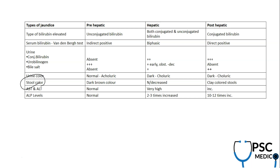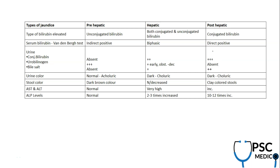In urine, examine conjugated bilirubin, urobilinogen, and bile salts. Conjugated bilirubin is absent in pre-hepatic jaundice, urobilinogen is present, and bile salts are absent. In hepatic jaundice, urobilinogen is absent — contributing to pale stool color. Bile salts are the predominant urine component in post-hepatic jaundice due to increased conjugated fraction.